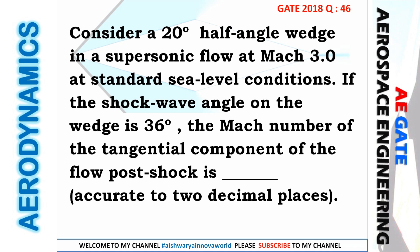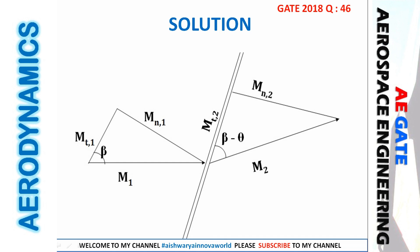What are the things given in this problem? They have given a half angle wedge of 20 degrees, and it is in a supersonic flow of Mach number 3. The shock angle — that is the beta value — is given as 36 degrees. What they have asked is the Mach number of the tangential component of the flow post shock. So theta is 20 degrees and beta is 36 degrees.